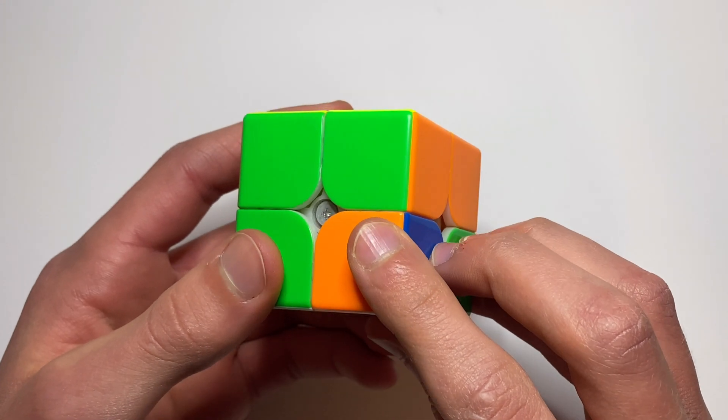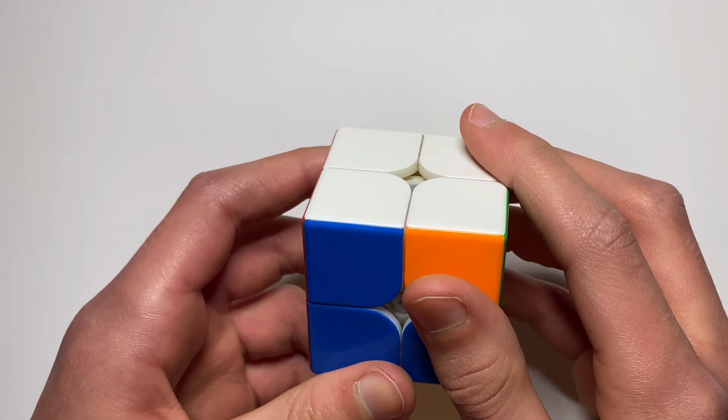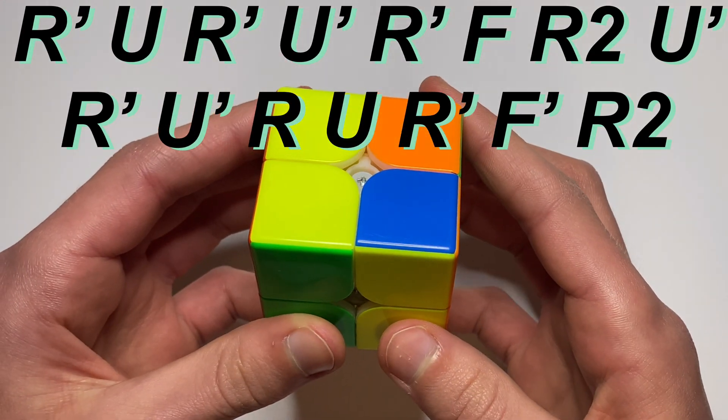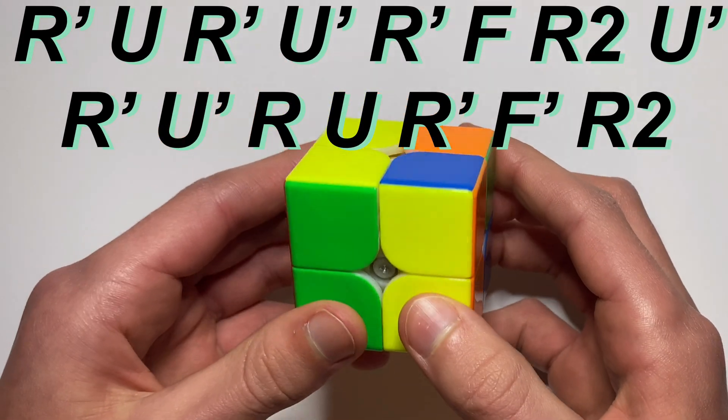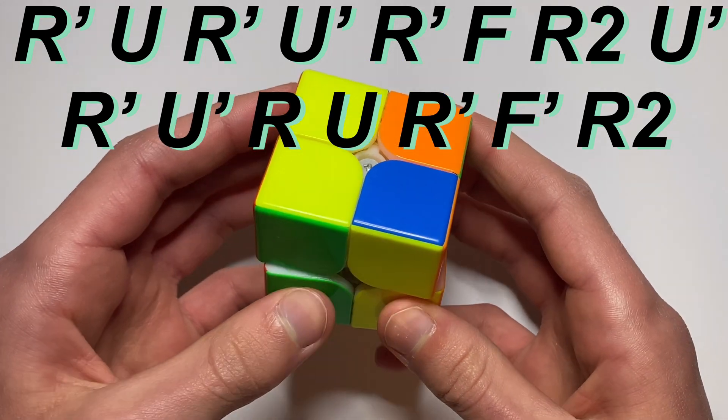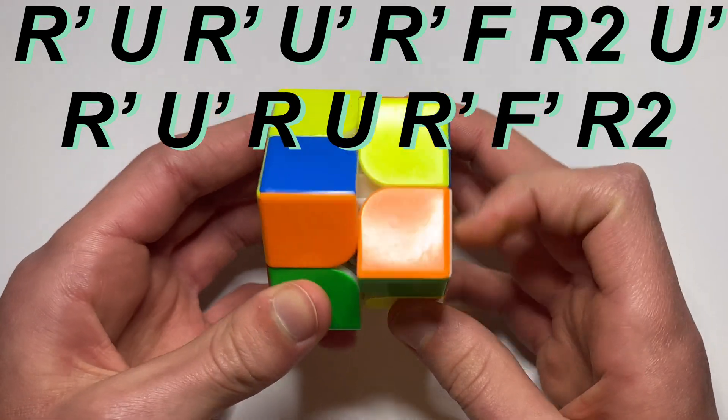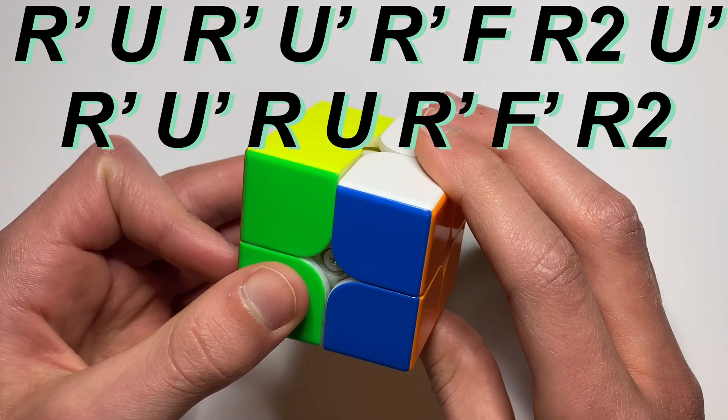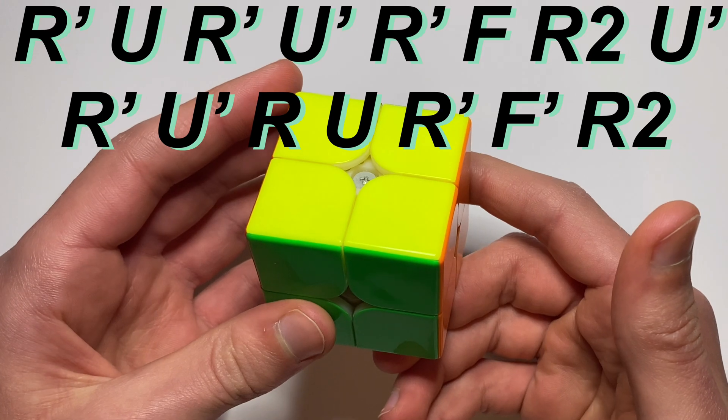The way you do this one is if you have your corners on the bottom that need to be swapped, instead of rotating to the bottom like this, you want to keep it like this. Then you do R prime and then that will count as the first R for your T perm. So you just act as if it's a T perm right here. You just start off with an R prime and then you do your T perm, then you do R2 at the end.